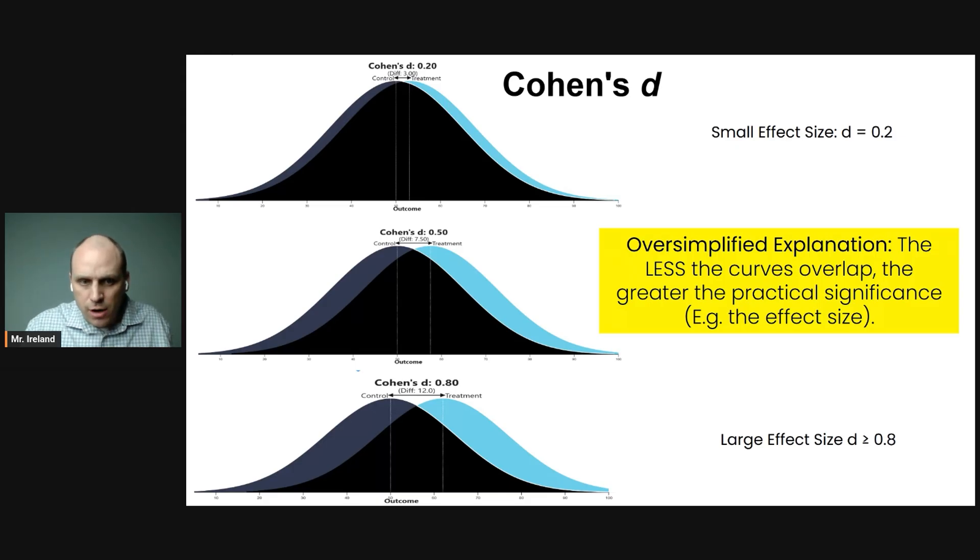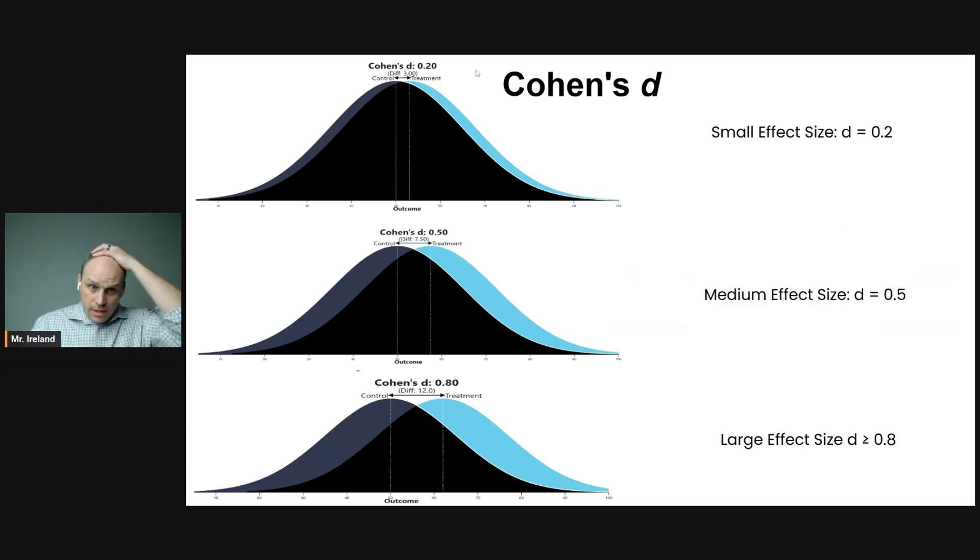The less the curves overlap, the greater the practical significance. The less the curves overlap, the greater the effect size. Or the more spread apart the curves are, the larger the effect size. So if we look at these curves, we have the curves practically overlapping. Their means, their averages are very similar. This would be a very small effect size. So a small effect size is equal to D equals 0.2.